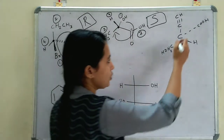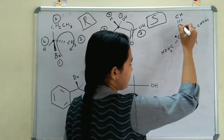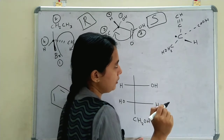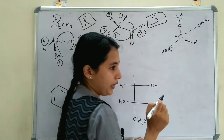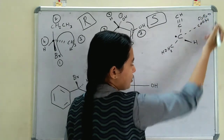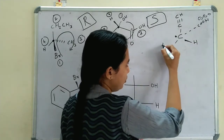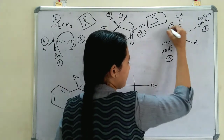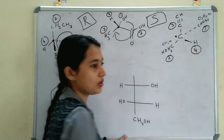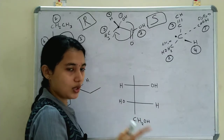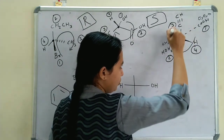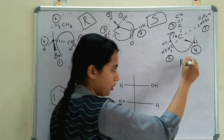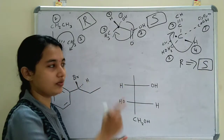Third example: the chiral carbon has substituents COOH, hydrogen, CH₂OH, and a larger substituent. COOH has 3 oxygens, so it gets 1; then 2, 3, and hydrogen gets 4. Hydrogen is at the above position, so we must reverse. Rotating 1→2→3 gives clockwise (R), but because hydrogen is above, R becomes S. So the absolute configuration of this compound is S.